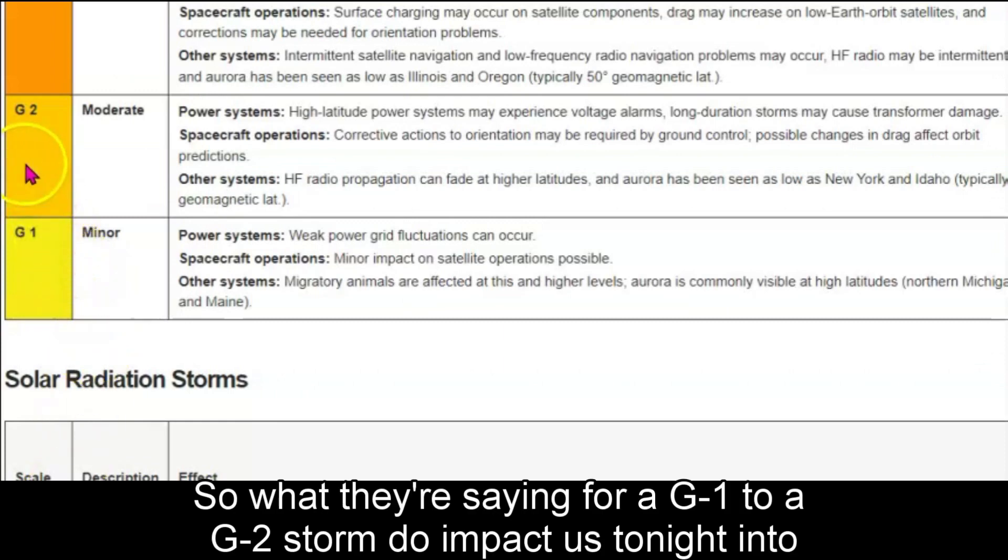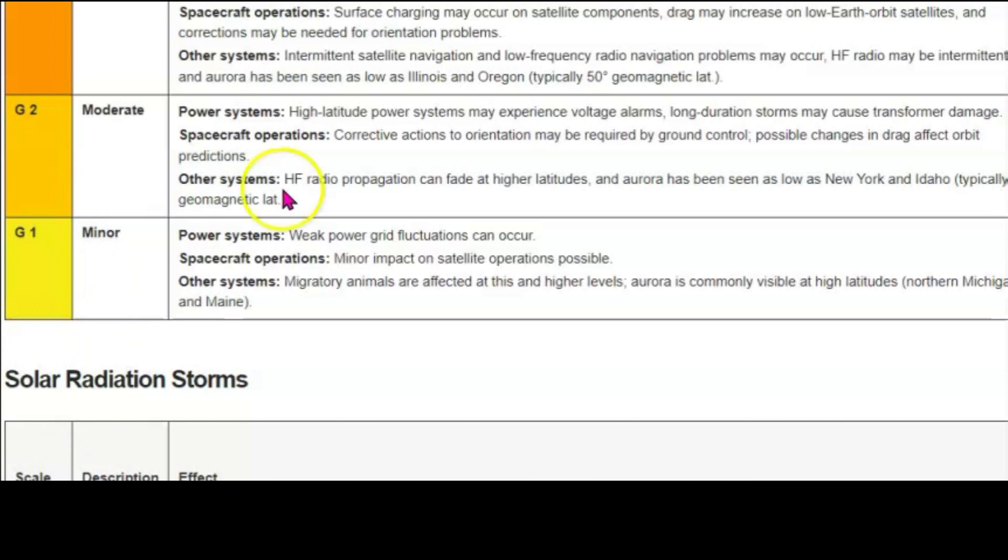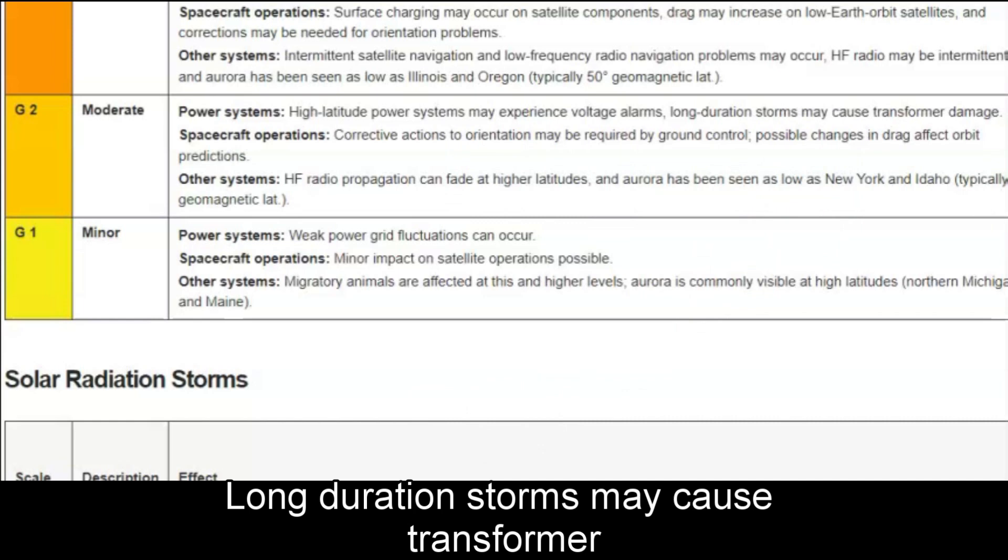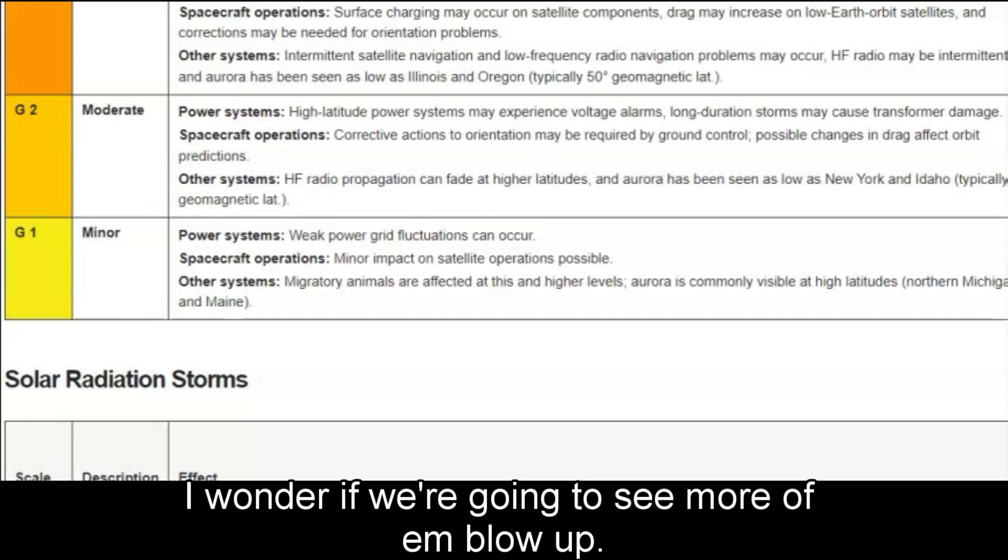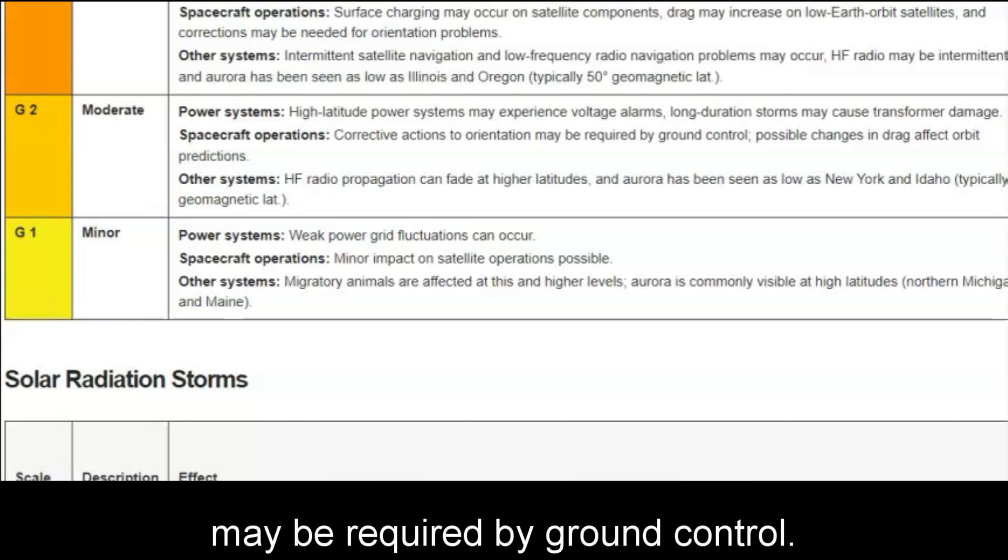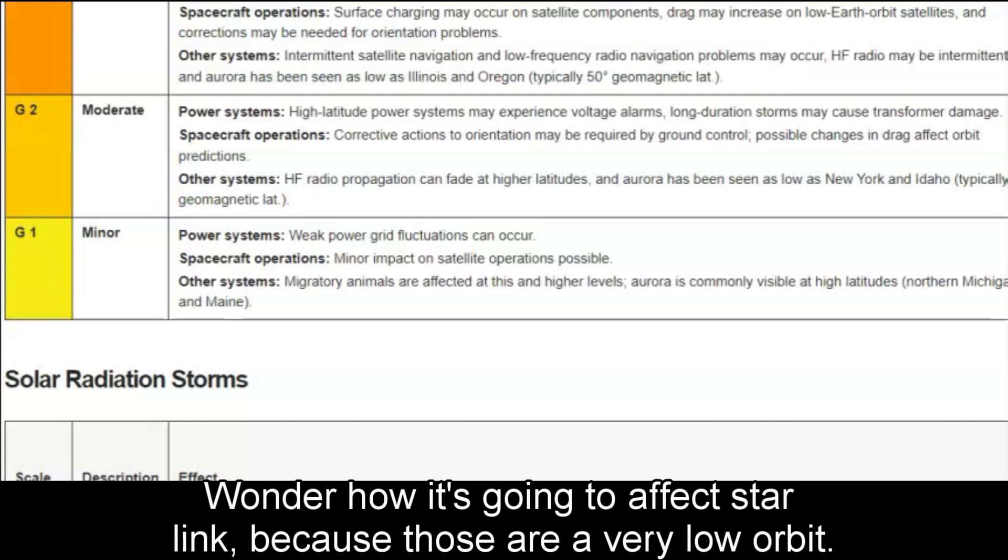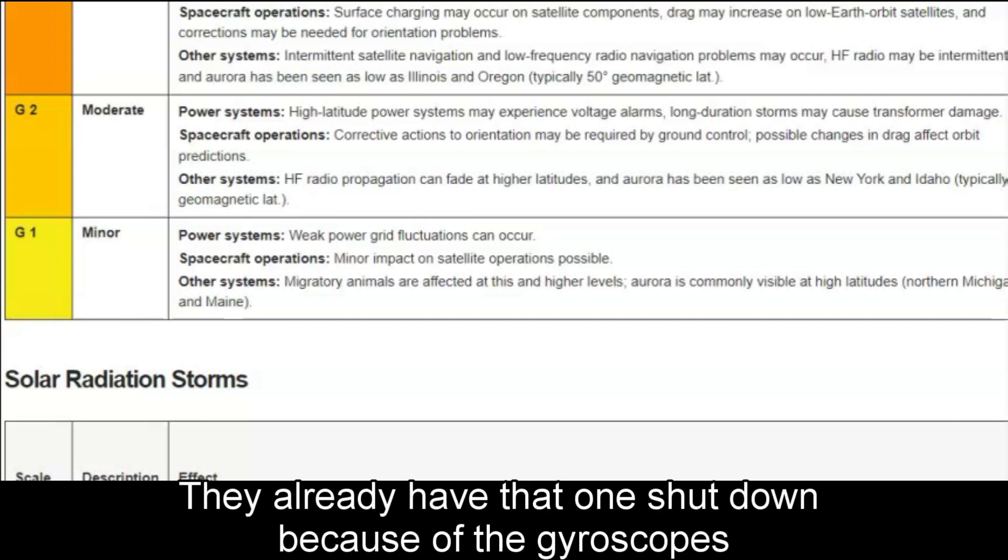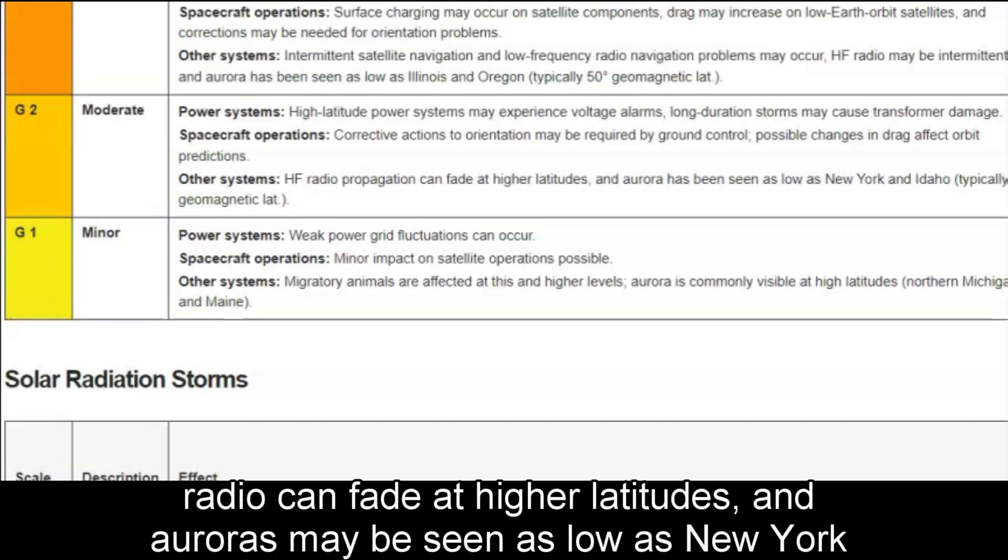So what they're saying for a G1 to a G2 storm to impact us tonight into tomorrow is that at high latitudes, power systems may experience voltage alarms. Long duration storms may cause transformer damage. I wonder if we're going to see more of them blow up. For satellites, corrective actions to orientation may be required by ground control. Changes in drag affect orbit predictions. I wonder how it's going to affect Starlink because those are a very low orbit. And is it going to have an effect on that one telescope, the satellite that I talked about before, which they're just going to let crash back into the Earth. What's it going to do to the Hubble telescope? They already have that one shut down because of the gyroscopes went out. High frequency radio can fade at higher latitudes and auroras may be seen as low as New York and Idaho.